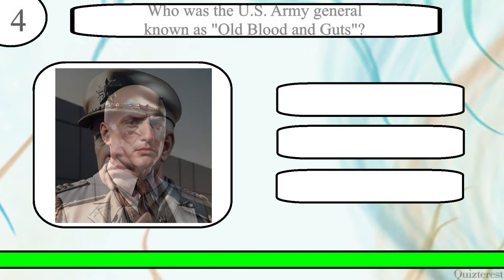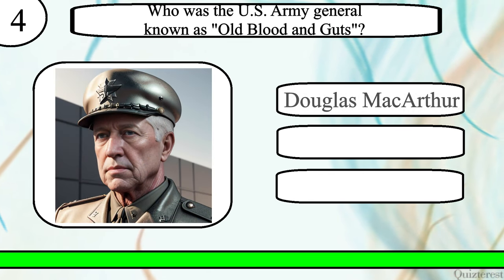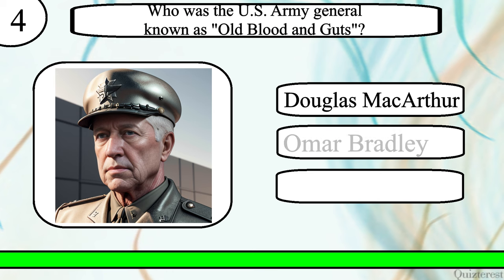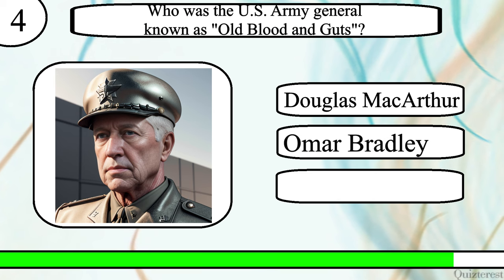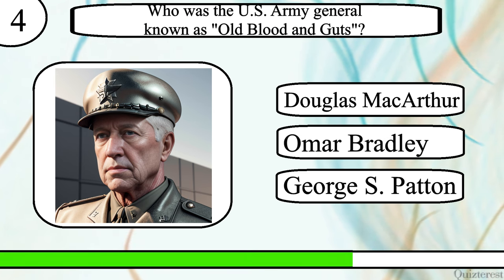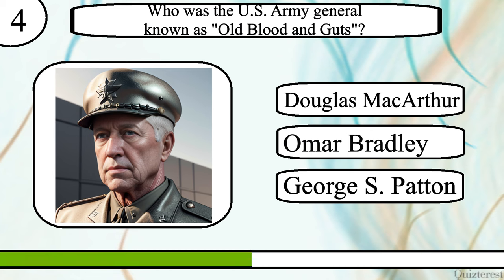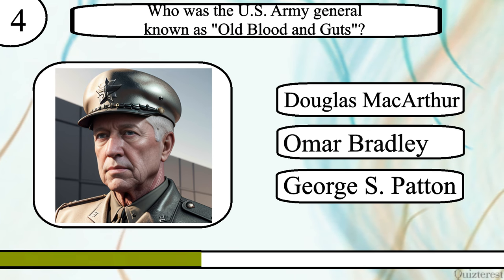Question 4. Who was the US Army General known as Old Blood and Guts? Douglas MacArthur, Omar Bradley, or George S. Patton?